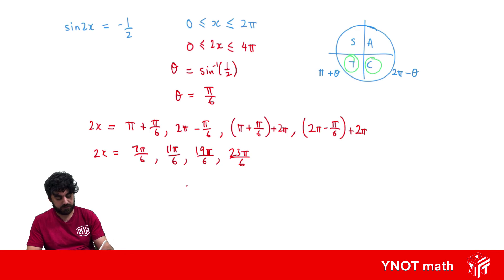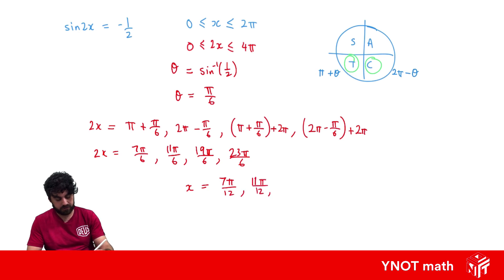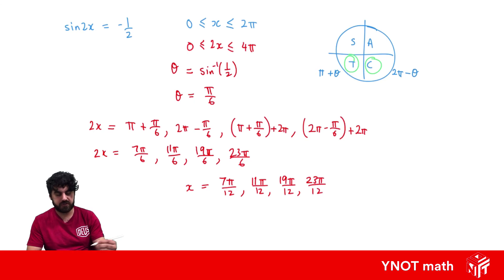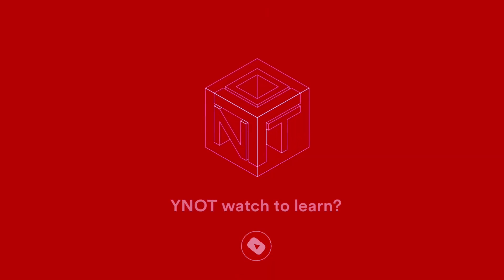Finally, we solve for x by dividing everything by 2 — which just multiplies each denominator by 2. So our final answers are x = 7π/12, 11π/12, 19π/12, and 23π/12.